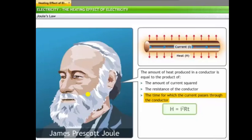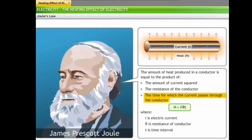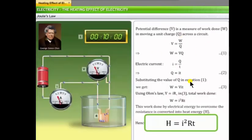This is the exact concept of Joule's Law: the amount of heat produced in a conductor is equal to the product of the square of the current (I²), the resistance of the conductor (R), and the time for which the current passes through the conductor (T). That is simply Joule's Law: H = I²RT, which we have already discussed in the previous part of this topic.